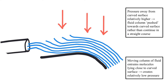Coming back to the same diagram, the moving column of fluid entrains molecules lying close to this curved surface and it creates an area of relatively low pressure over here. On the other hand, pressure away from the curved surface is relatively higher. And the fluid column, as a result, is pushed downwards towards this curved surface rather than continuing in a straight course.